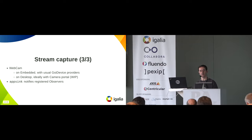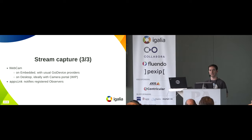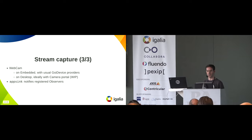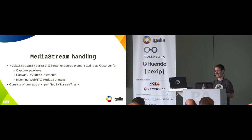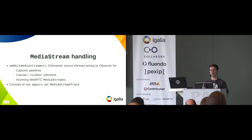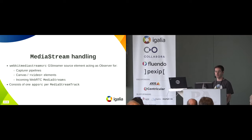On desktop, since applications are sandboxed with Flatpak, we can't really use the GST device providers — we have to go through the camera portal. I started working on that, and hopefully it should be merged soon. All these media streams, if you want to play them, we have a source element in WebKit called WebKit Media Stream Source. It acts as an observer to the AppSinks I mentioned, then provides data using AppSource to playback pipelines. It's also used for playback of incoming streams, and we have one AppSource per media stream track.